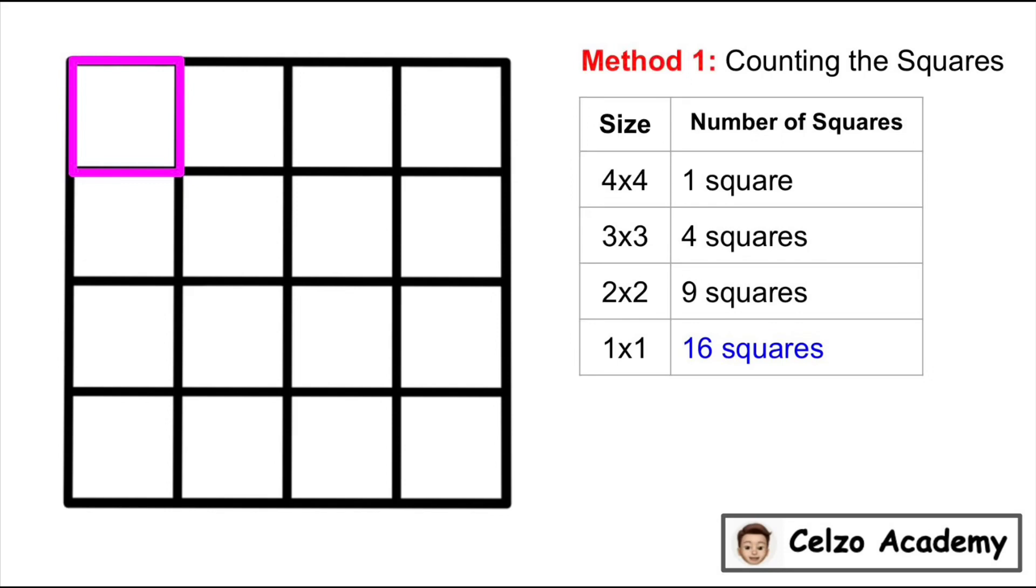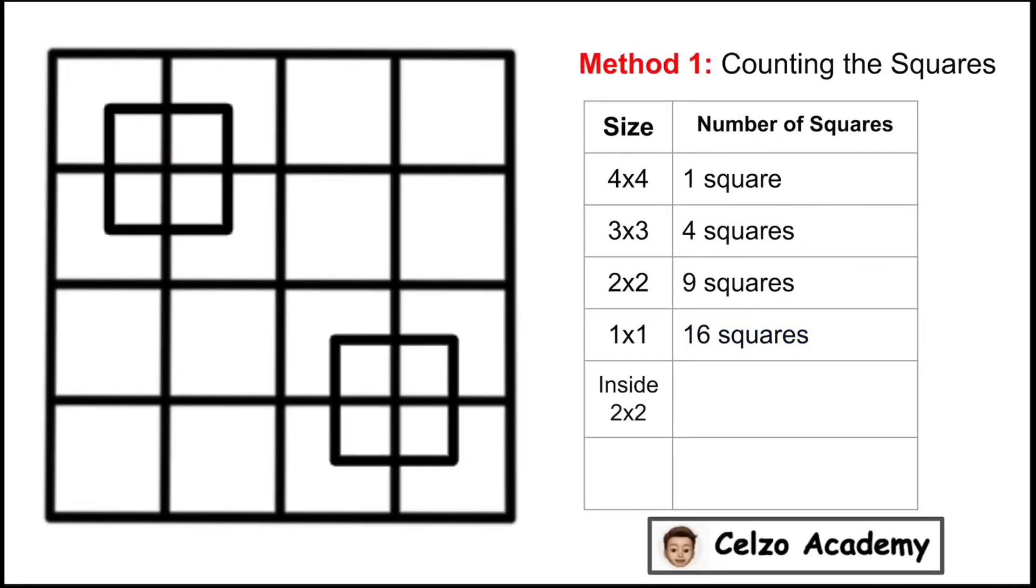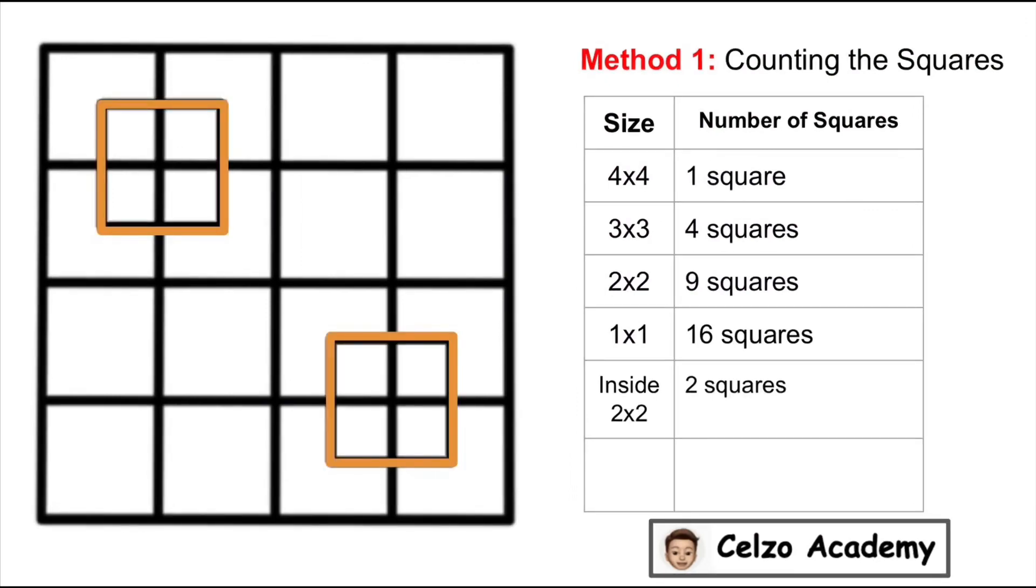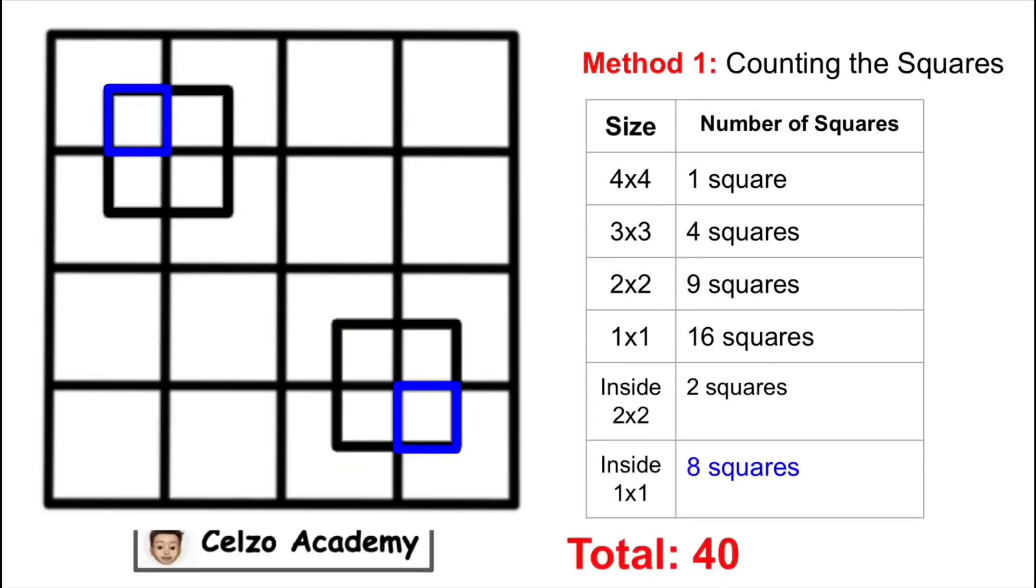Now let's put back the 2 smaller squares inside the big square. So there are 2 different squares that are 2x2 in size. Inside these 2x2 squares, how many 1x1 squares can we have all in all? 8 total, right? So if we will add all the squares, we will have a total of 40 squares in this figure.